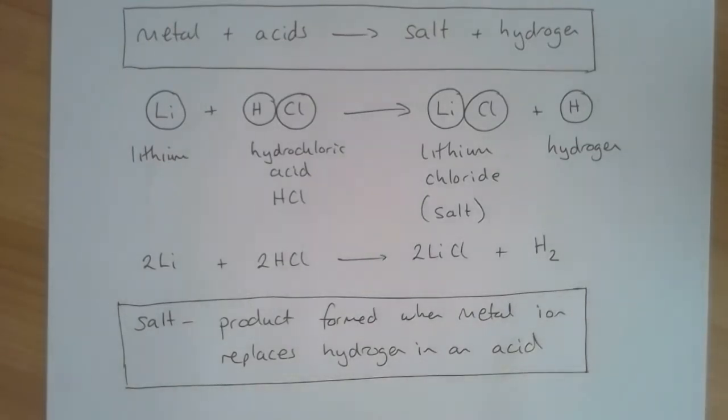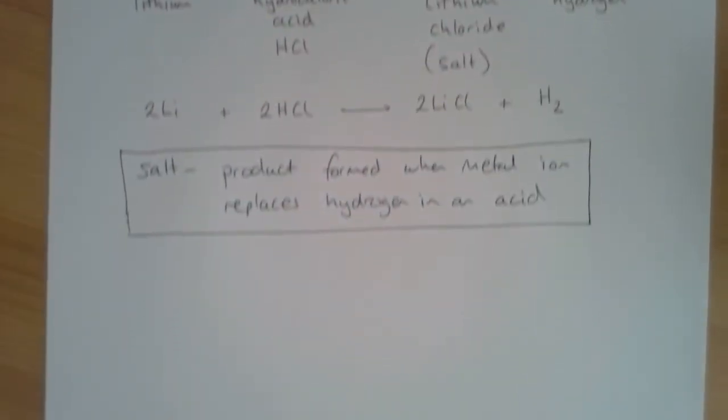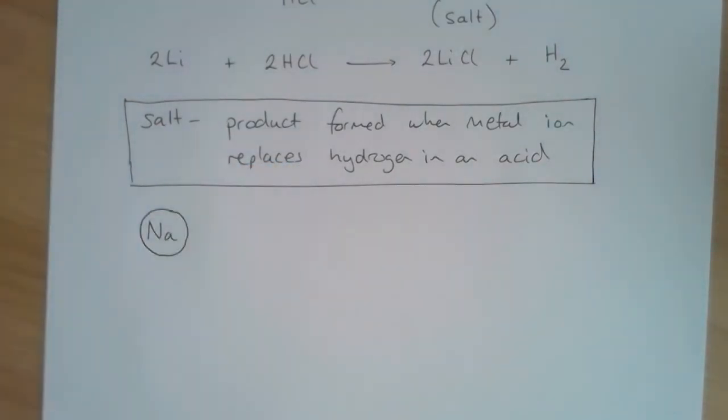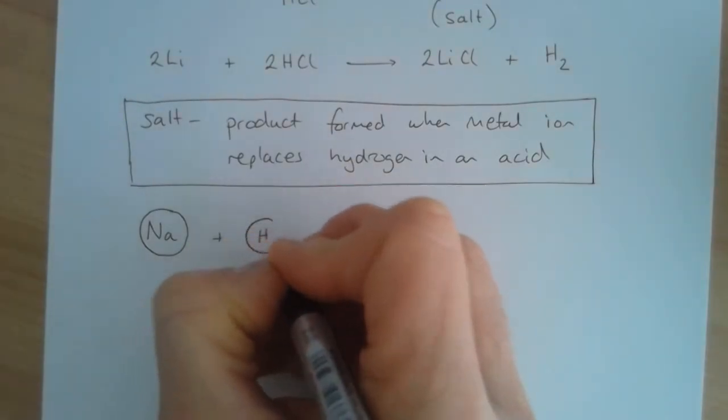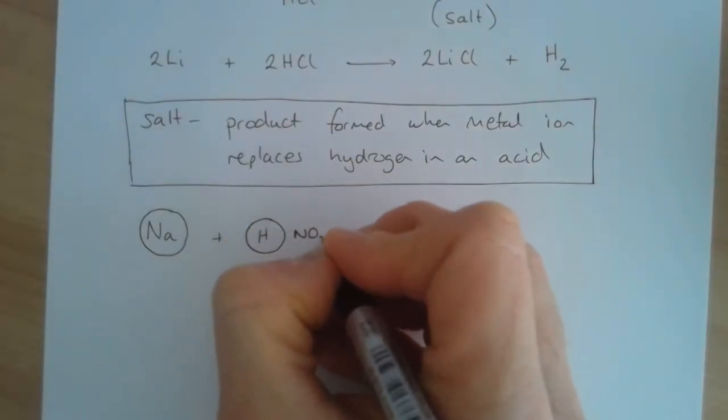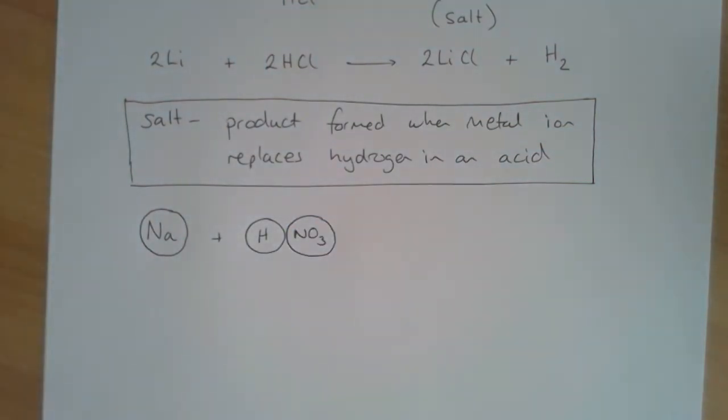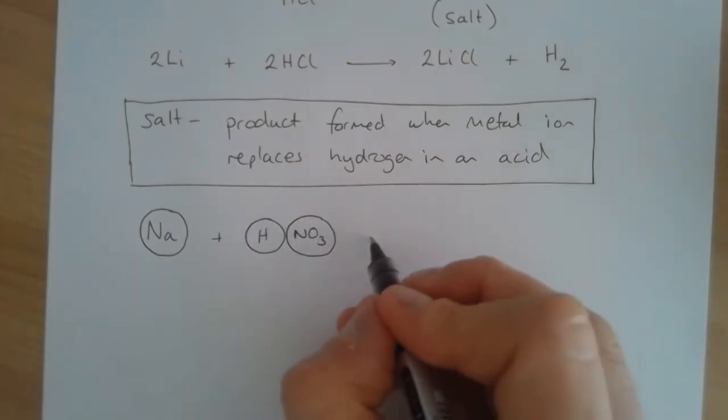This idea about salts we're going to come across quite a lot in our study of chemical reactions. Let's have a look at another example with a different acid. I'm going to have a look now at the reaction of sodium, so I've got one sodium metal atom there, and this time I'm going to react it with nitric acid. Nitric acid has a hydrogen, nitrogen, and three oxygen atoms in it, but the important thing is it's got a hydrogen attached to this nitrate ion.